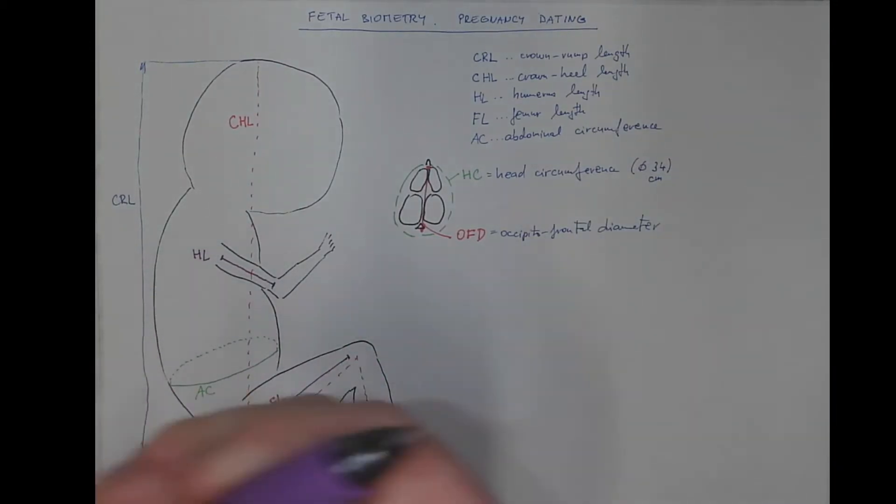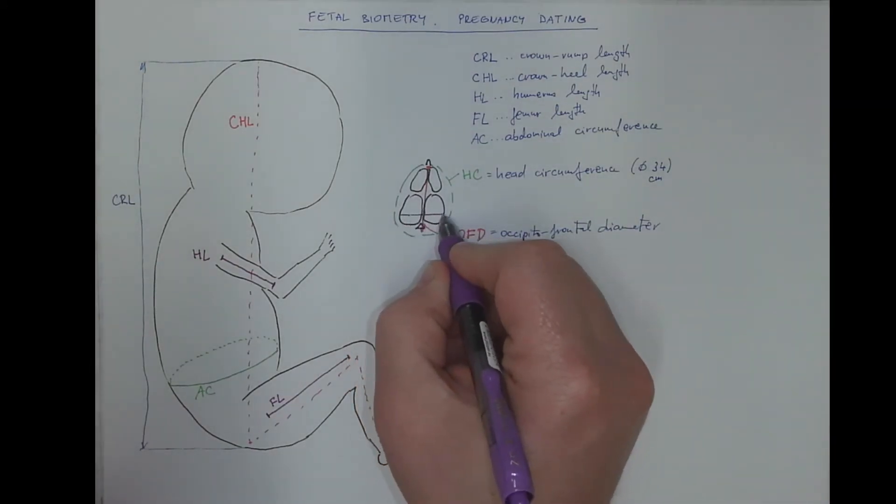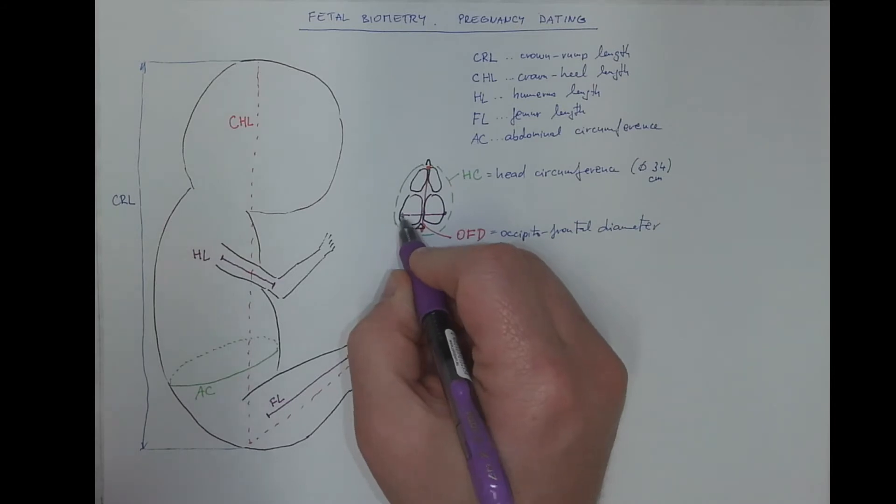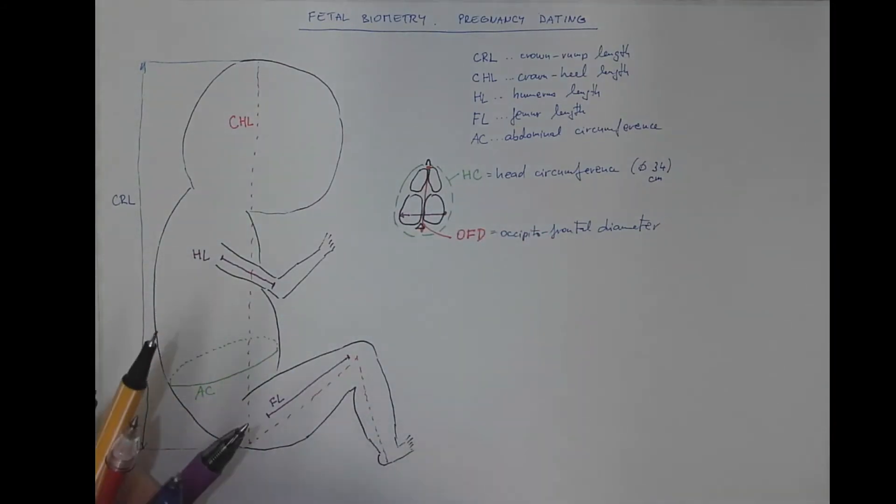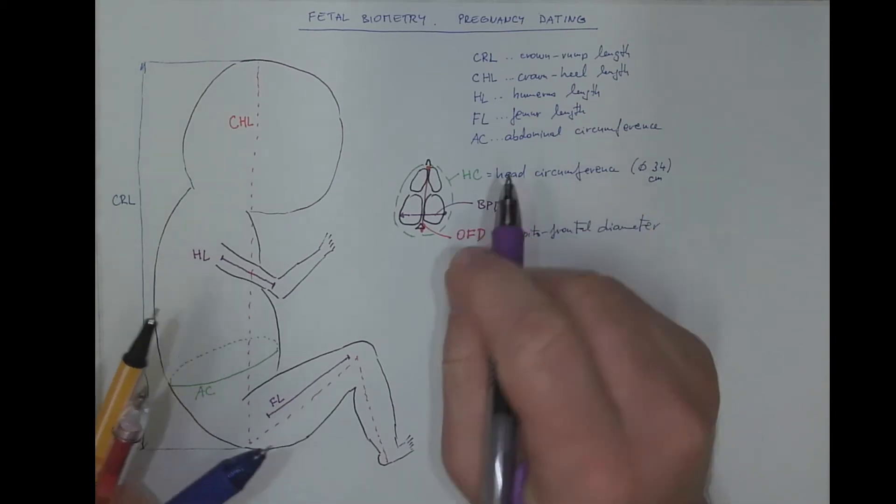And the last parameter that is routinely measured is the distance between the tuberosities of parietal bones. It's known as the biparietal diameter.